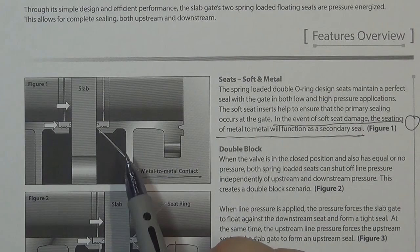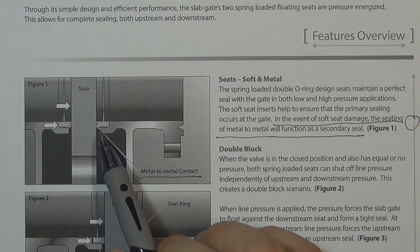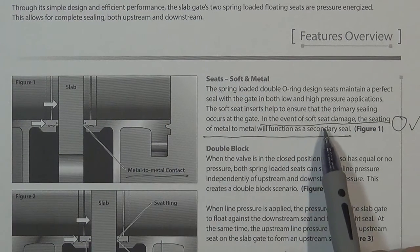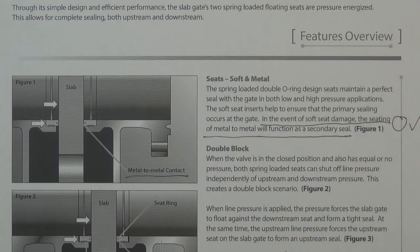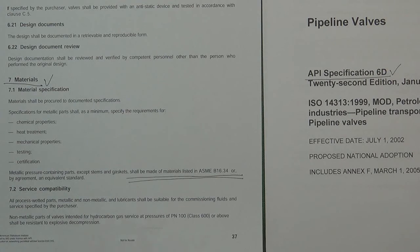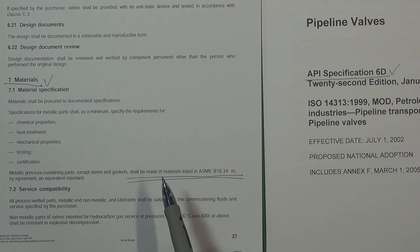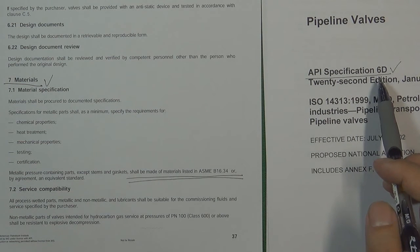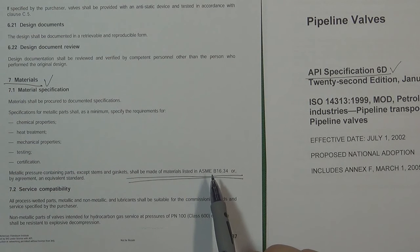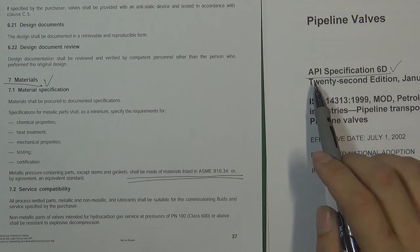The gate valve fire safety function uses the same principle. When fire occurs or the soft seat is damaged, the metal-to-metal seat functions as a secondary seal. When designing a valve by API 6D and choosing the correct material, you still need to reference the material list from ASME B16.34, because the API 6D material list follows ASME B16.34.